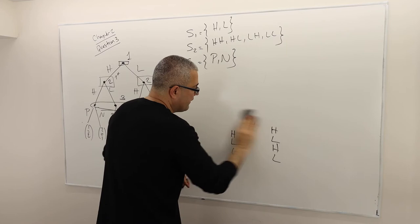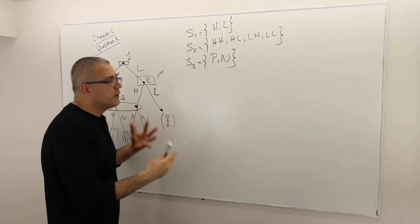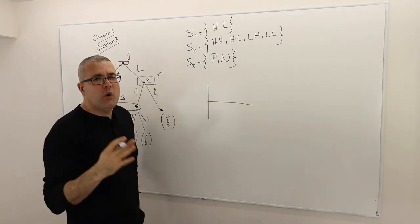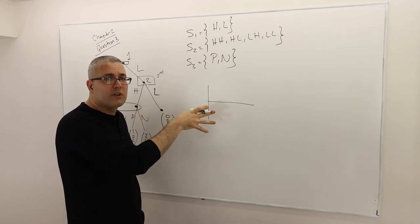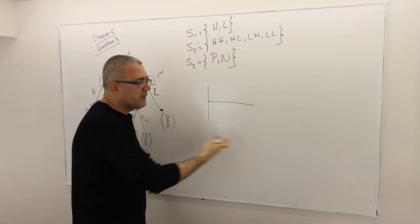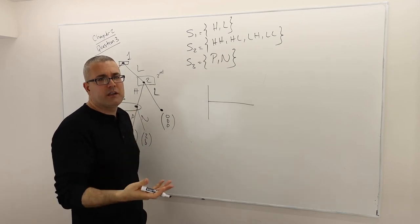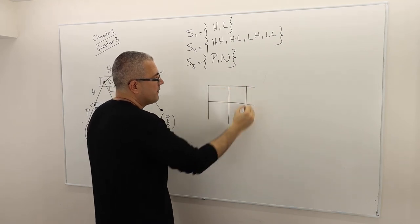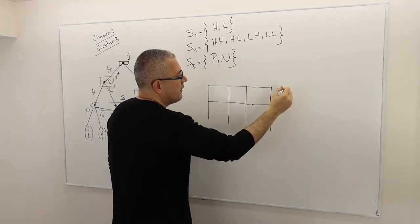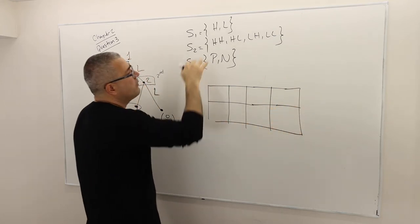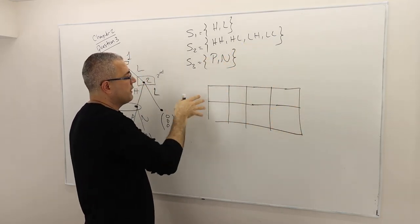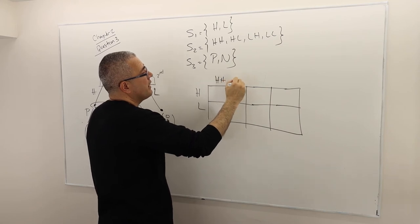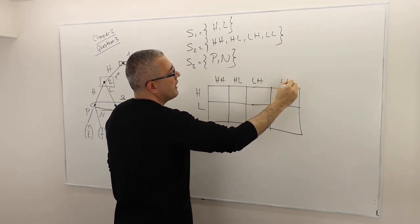To write the normal form representation: player one is the row player, player two is the column player, player three is the matrix player — always follow this standard approach. Player two has four strategies so there are four columns and two rows for player one's H and L. HH, HL, LH, LL belong to player two, and the matrix belongs to player three.